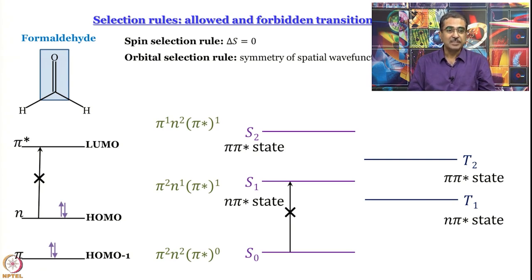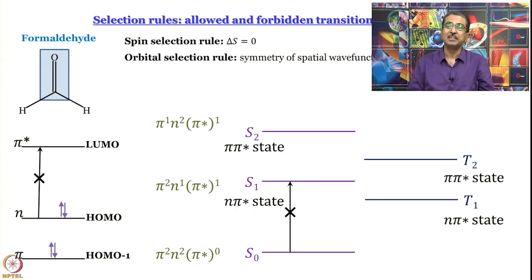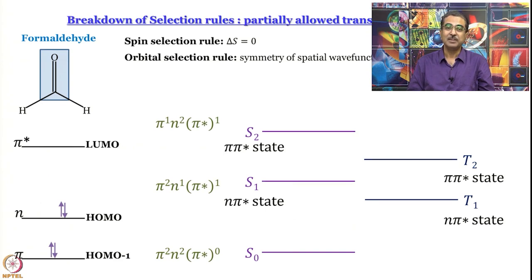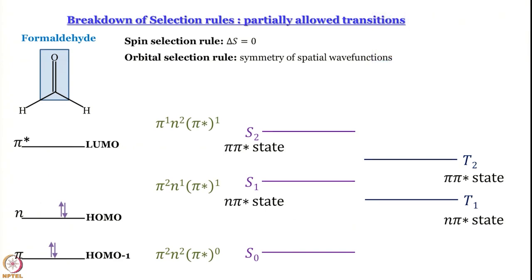Since electronic state energies are determined by both the spatial and spin parts of the wave functions, both parts have a role to play. Some transitions are forbidden by spin. A selection rule tells us which transitions are allowed.